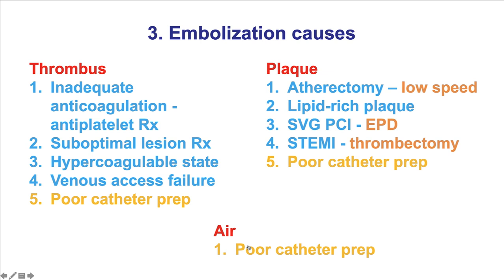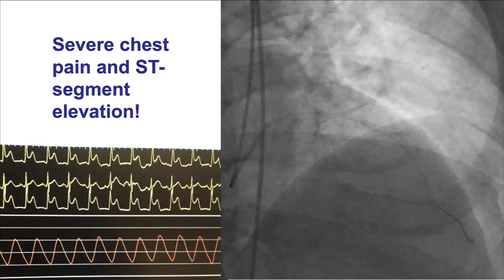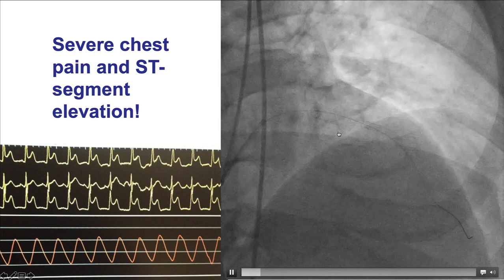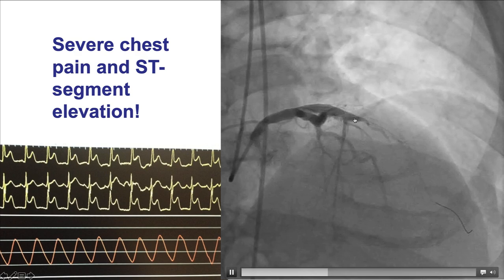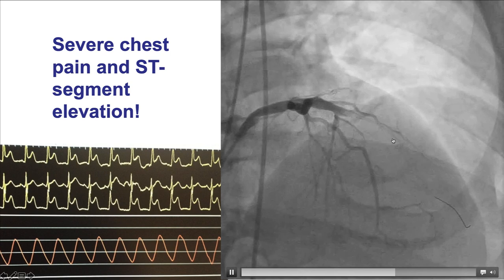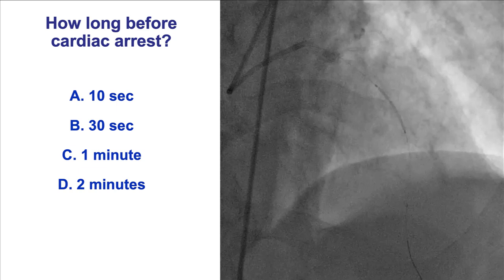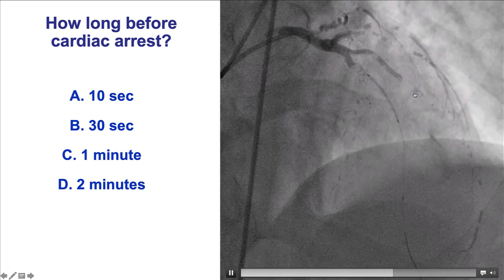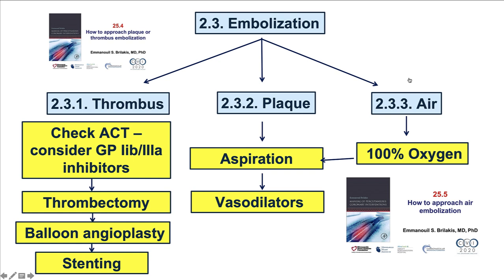Moving on to coronary embolization. Embolization can happen with thrombus, plaque, or air. Thrombus is prevented as discussed in the previous section. Plaque embolization can happen especially in restenotic lesions or in saphenous vein graft or ACS PCI. Air embolization usually happens because of poor catheter and manifold preparation. This is an example of a patient who had PCI of the mid-LAD and suddenly developed chest pain and ST segment elevation, with a typical back-and-forth movement of contrast through the recently placed stent, typical of no-reflow. This is another example of massive air embolism, which led to cardiac arrest in this patient.